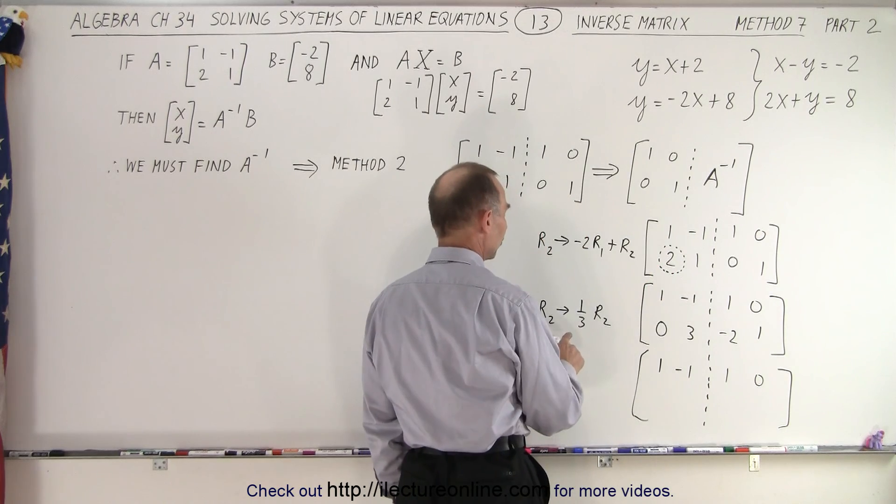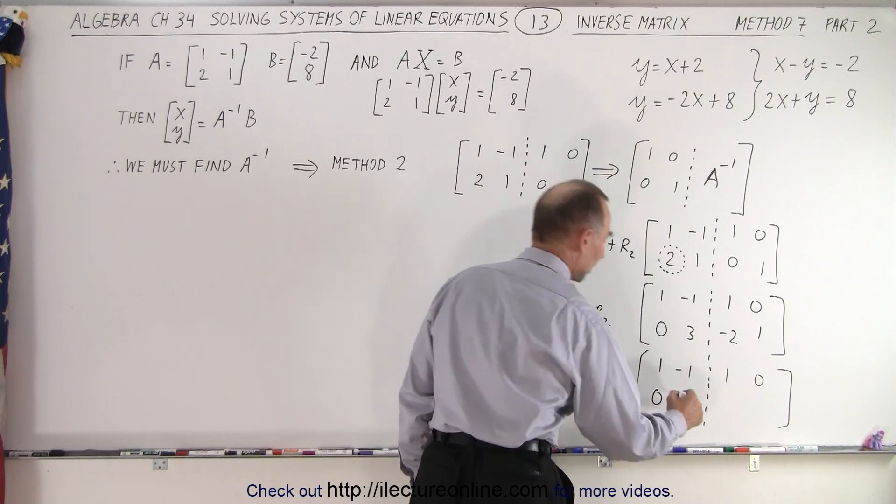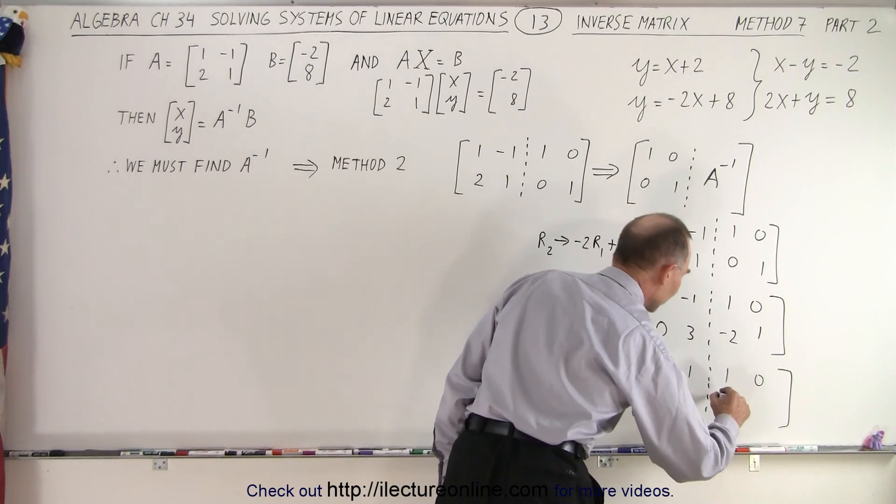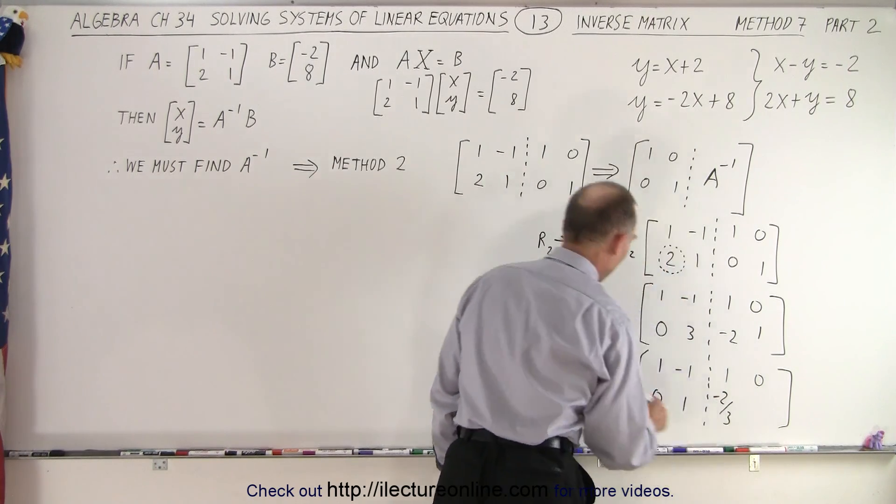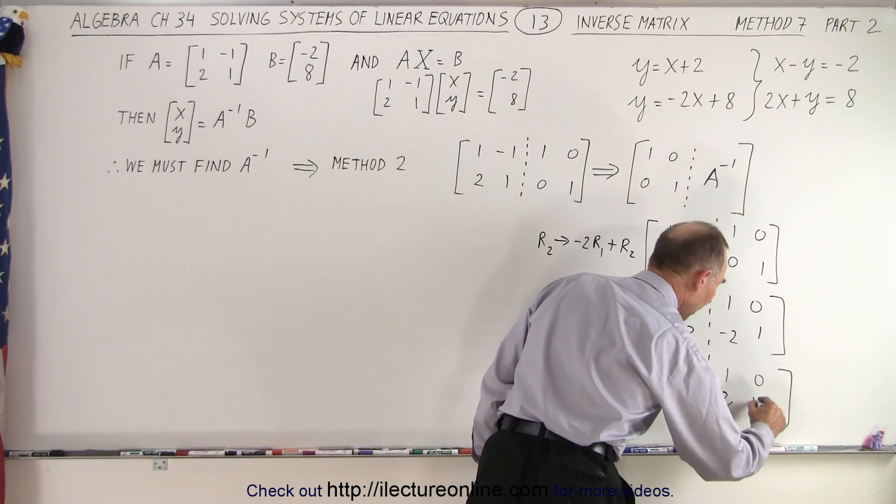But the bottom row changes. We take 1 third of 0, that's still 0. 1 third of 3, that's now 1. 1 third of negative 2, which is negative 2 thirds. And 1 third of 1, which is a positive 1 third.